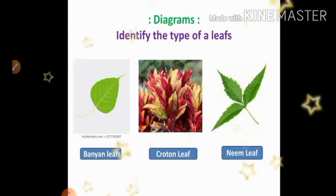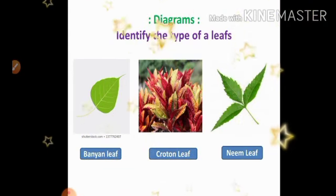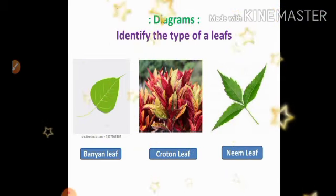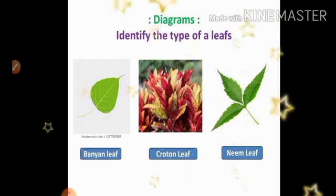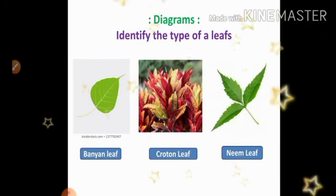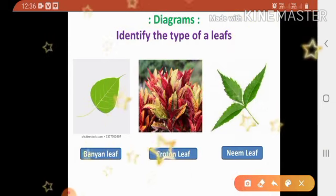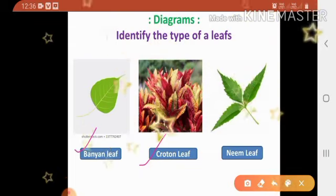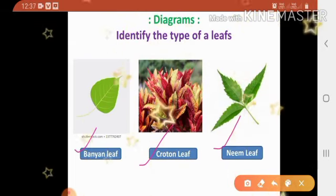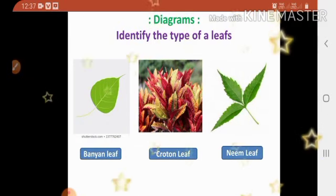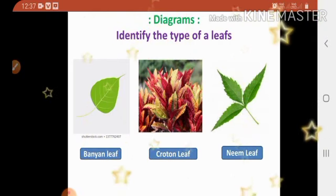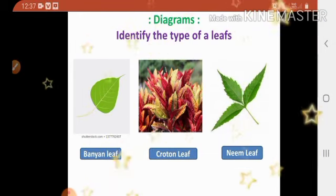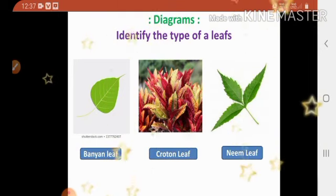Third question: diagrams. Identify the type of leaf. Children, here I give three pictures of leaves. See the picture and identify the leaf. Second one: croton leaf — it is a non-green plant. Third one: neem leaf. Here we have completed the extra question answers. Write all these in your classwork notebook very neatly and draw the diagrams also.